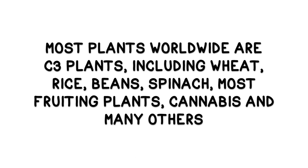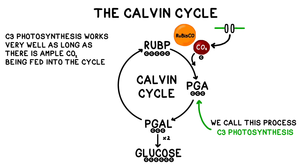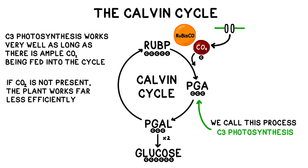Most plants in the world are C3 plants, but a few common examples include wheat, rice, beans, spinach, fruiting plants, cannabis, and others. The C3 photosynthesis process works very well, assuming that there is an ample supply of carbon dioxide available to keep feeding into the Calvin cycle.